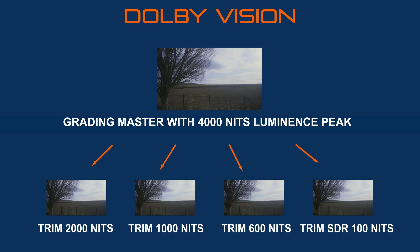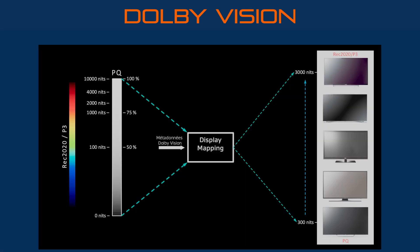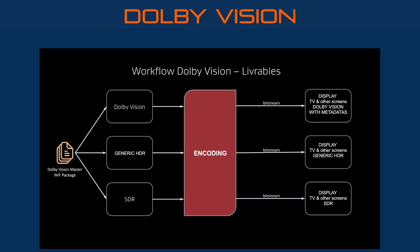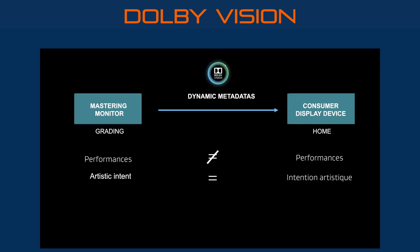Dolby Vision offers you trims — from the final color grading, it makes a tone mapping creating a trim at 2000 nits, a trim at 600 nits, and even a trim in SDR. From the same color grading, it provides references in the metadata for different versions adapted to each display device. The signal is encoded and sent to your Dolby Vision TV, which contains a Dolby Vision CMU that recognizes the metadata, interprets it, and displays the signal.